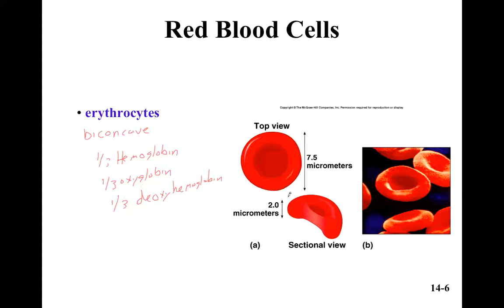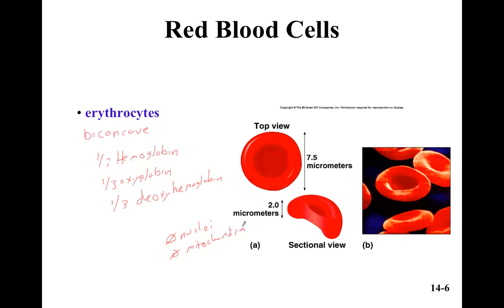Red blood cells don't have nuclei. A mature red blood cell does not have a nucleus, so it can't divide on its own. The reason it doesn't have a nucleus is that we need these cells to be flexible so they can squeeze through capillaries. They also have no mitochondria — the cell organelle used for cellular respiration to get energy — making them very flexible.